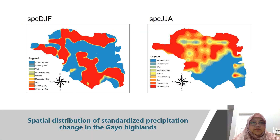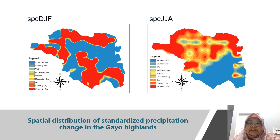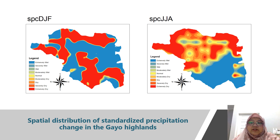The maps of SPEI DJF and JJA show the spatial distribution of rainfall in the Gayo Highlands, Central Aceh District, and Bener Meriah, showing that the JJA period is drier than the DJF period. The DJF period has both very wet and very dry conditions, while the JJA period has rainfall in the slightly dry to very dry category reaching 79%, dominated by the northern region. This region has a higher risk of drought than the southern region.